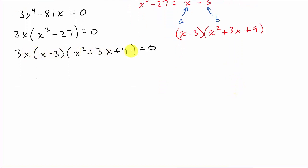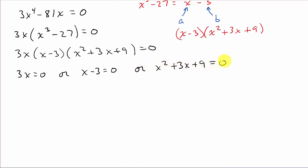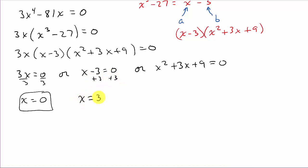Setting each factor equal to zero: 3x equals zero gives x equals 0 after dividing by 3 — there's one solution. x minus 3 equals zero gives x equals 3 after adding 3 to both sides — there's another solution.